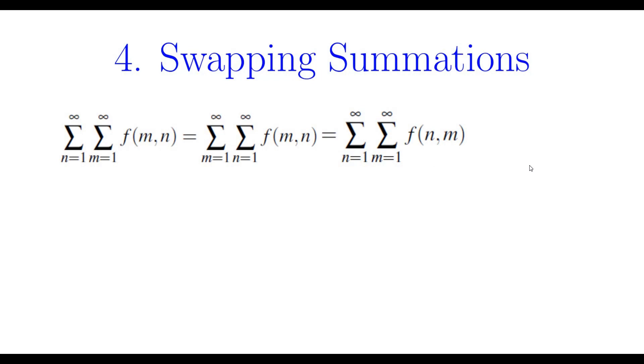There are variations of that that you can use. For example, if you are given a sum n equals 1 to infinity, m equals n to infinity, what you can do is look at these conditions. What we have here is really that m is at least n. So in other words, m can be n or n plus 1 or n plus 2 and so on. Another way of thinking about that would be to say n is at most m. In other words, n can be 1 all the way to m. So by that method, you can swap the summations.